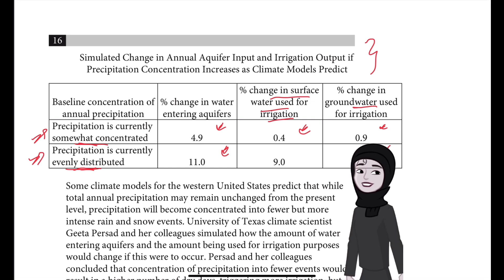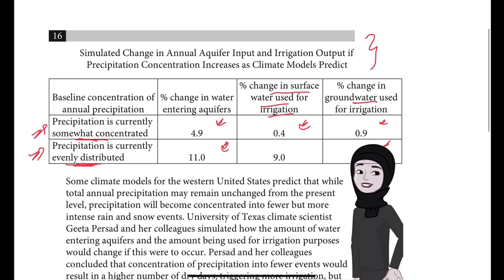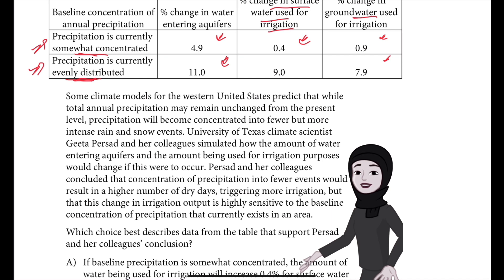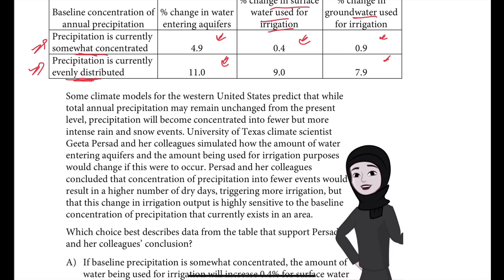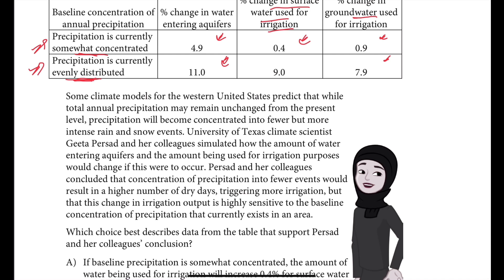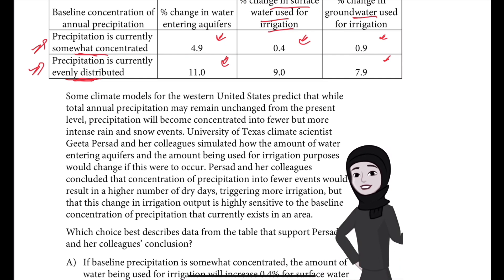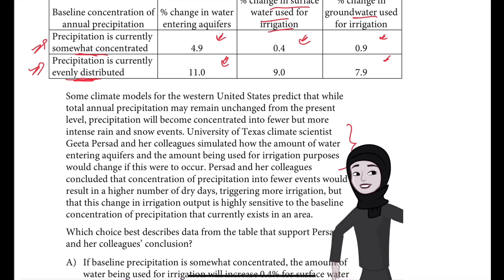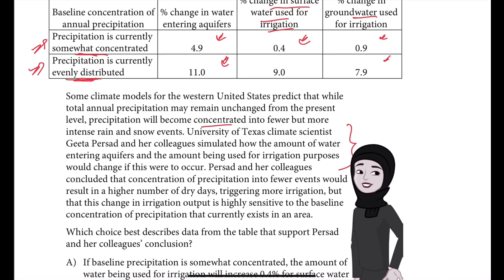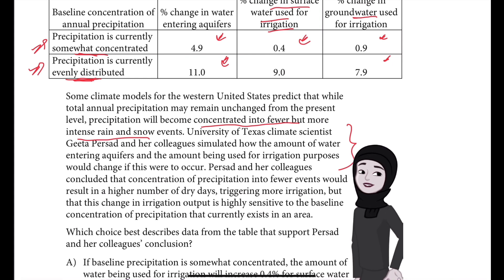Percentage change in groundwater use for irrigation is 0.9% for somewhat concentrated and 7.9% for evenly distributed. Some climate models for the western United States predict that while total annual precipitation may remain unchanged, precipitation will become concentrated into fewer but more intense rain and snow events. University of Texas climate scientist Geeta Prasad and her colleagues simulated how the amount of water entering aquifers and the amount being used for irrigation would change if this were to occur.